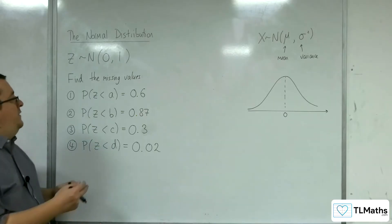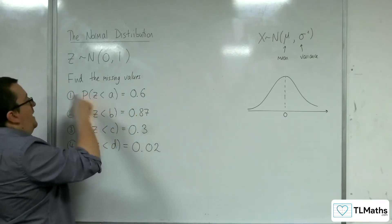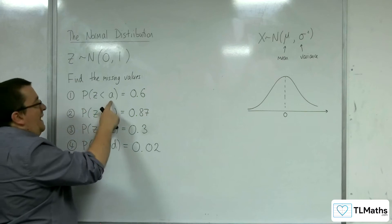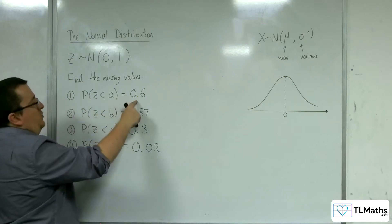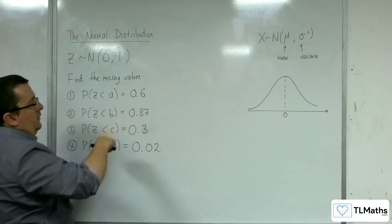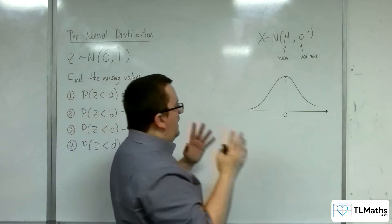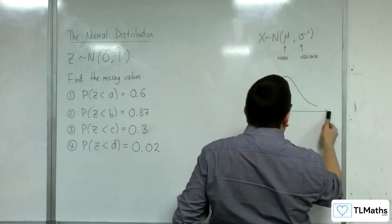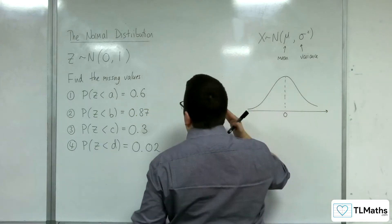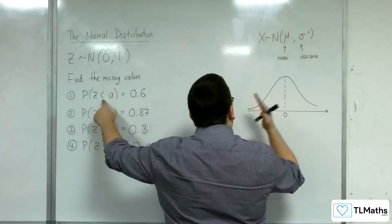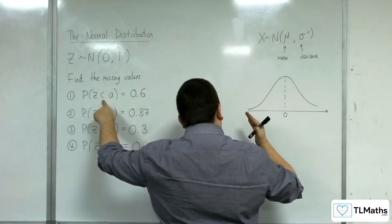So, what is this asking for? Find A such that the probability of Z being less than A is 0.6. So, there is a value of A somewhere along here, so that if I work to the left of it, then the probability is 0.6, the area is 0.6.